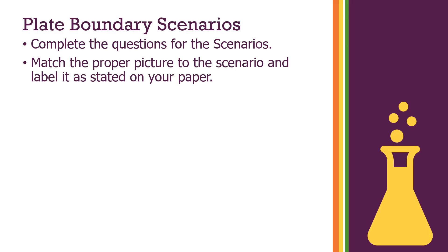On the next page in your notebook you have the plate boundary scenarios. Look at the picture of a place on Earth, complete the questions for that scenario, and match it to one of the three plate boundary diagrams. There's also some labeling to do — label things like the two plates and the convection cycles. Make sure you do the flip-up section underneath as well. That's your practice on plate boundary scenarios; we'll do more practice — this is just getting you started.